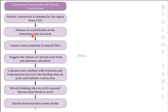At the neuromuscular junction, acetylcholine is released. In Tamil, we refer to this as the nerve-muscle junction. When the nerve system is activated, acetylcholine is released. The third stage is the generation of an action potential in the muscle fiber.